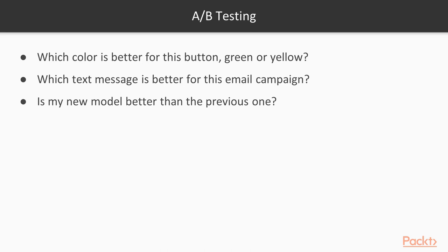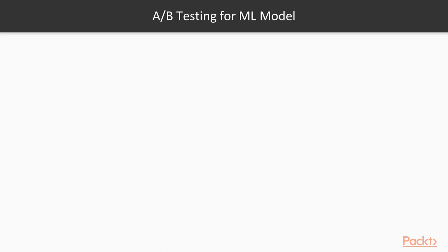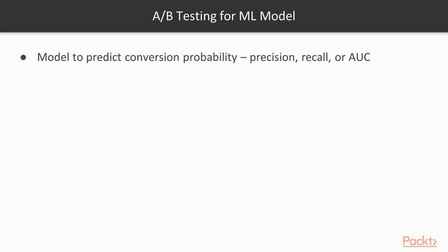All of these questions can be answered through A/B testing. Sometimes you don't know which specific accuracy metric to optimize for in your ML models. For example, a model that predicts the conversion probability — so precision, recall, or AUC — can use some potential accuracy metrics. But you don't know which one exactly you want to optimize for.